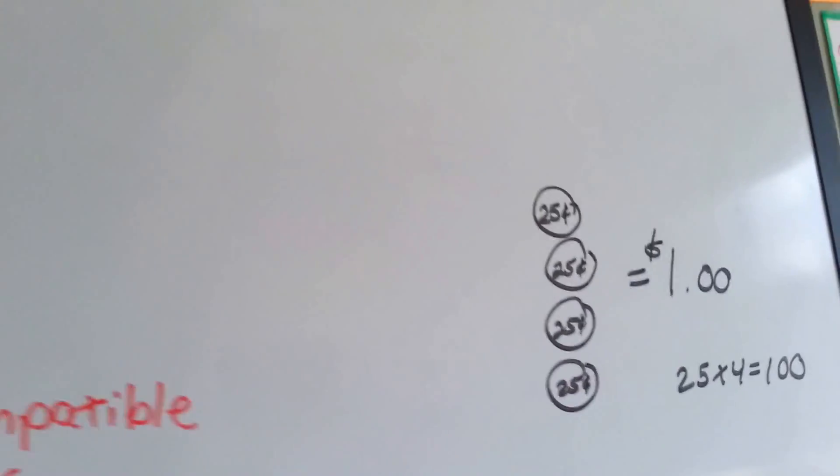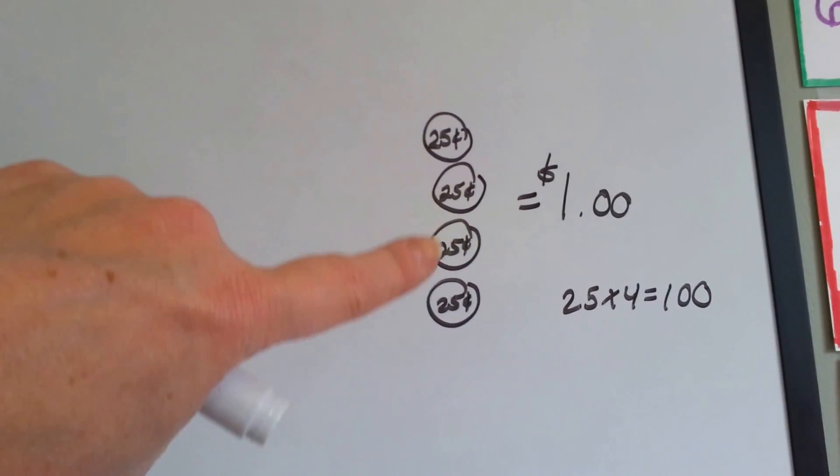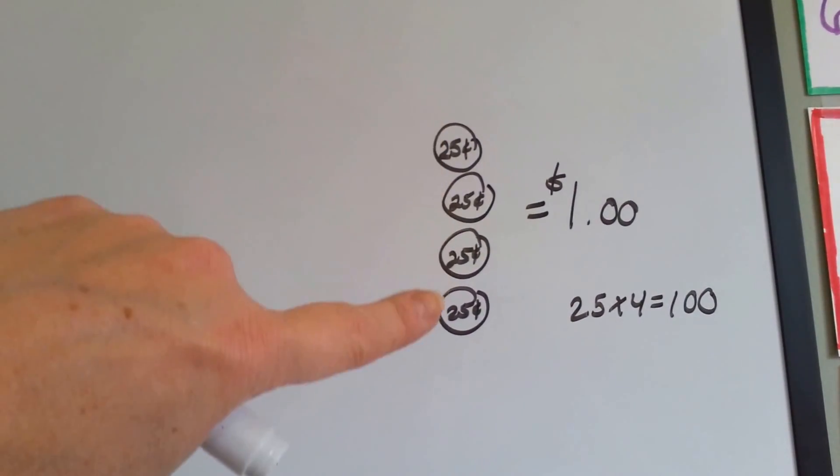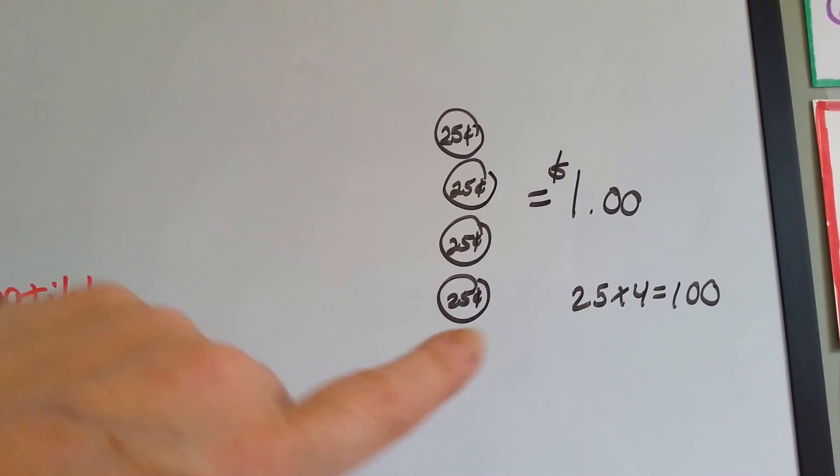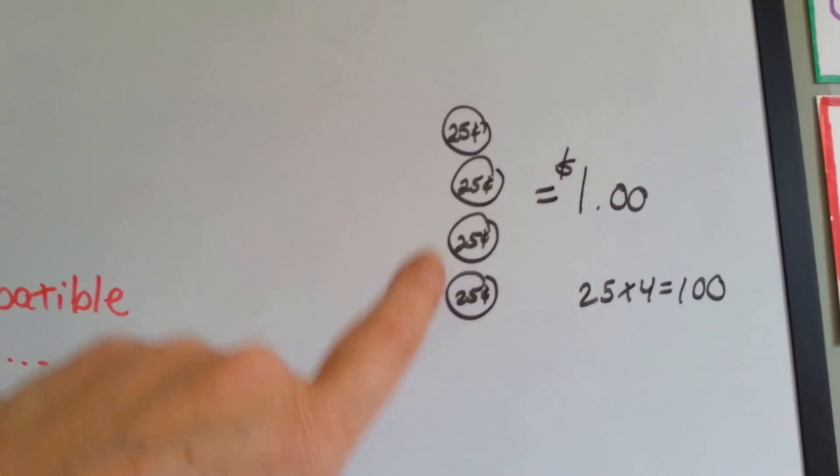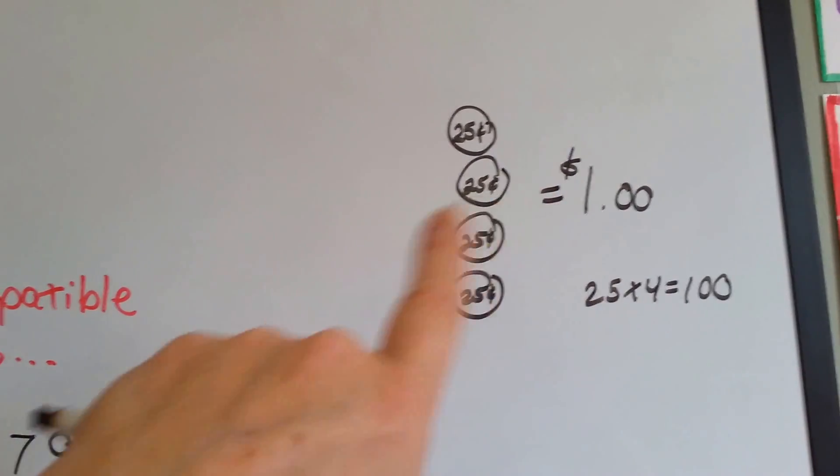Why don't you take a look at this. Four twenty-five-cent pieces, four quarters, is equal to a dollar. So just remember that twenty-five times four is a hundred.